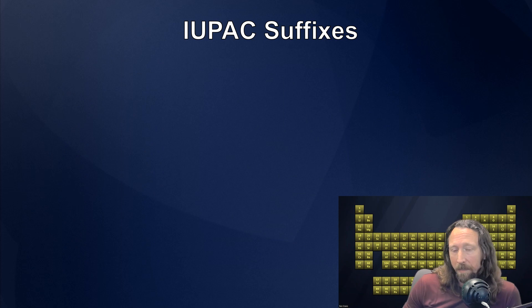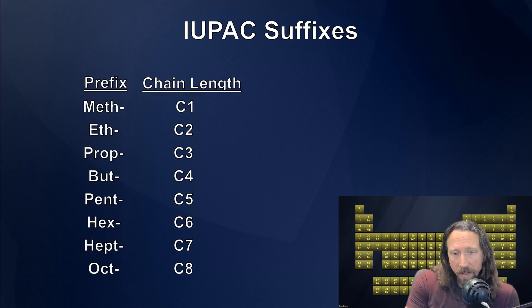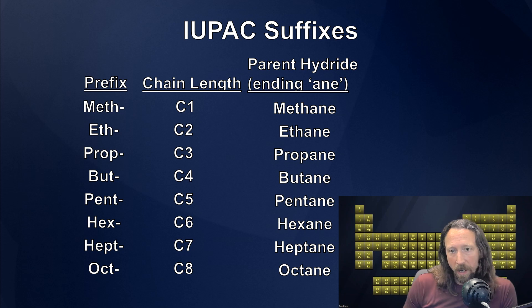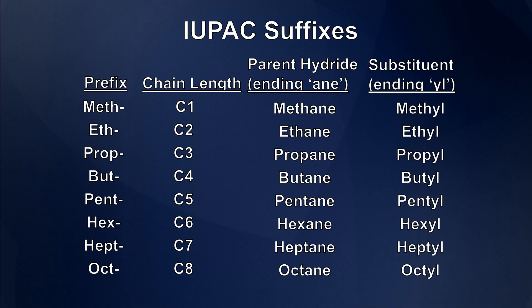The suffix tells us whether we're dealing with a saturated or unsaturated hydrocarbon and whether functional groups are present. When we combine prefix and suffix, we get a picture of the molecule — methane is one carbon saturated, ethane two carbons saturated, propane three carbons saturated, and so on. For branched hydrocarbons, we designate one chain as the main or parent chain; all other chains are substituents, indicated by the suffix -yl. So methyl means one carbon hanging off the main chain, ethyl means two, propyl means three, and so on.